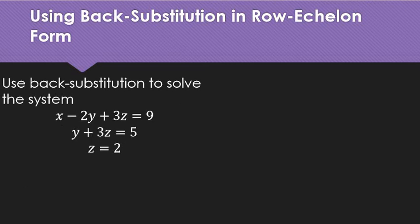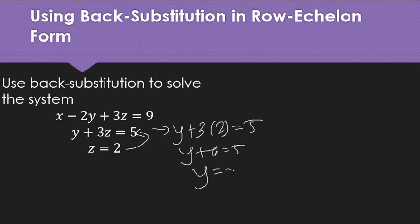This time, try to do back substitution. Pause the video and try to solve this system using back substitution. All right. We have here z. Let's insert it here. We will have y plus 3 times 2 equals 5. We'll have y plus 6 equals 5. Therefore, y equals negative 1.